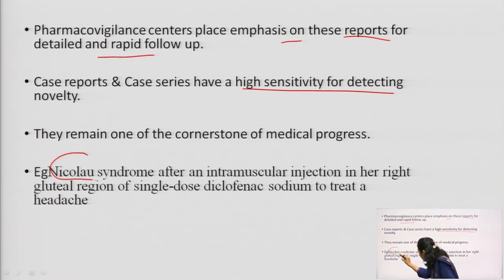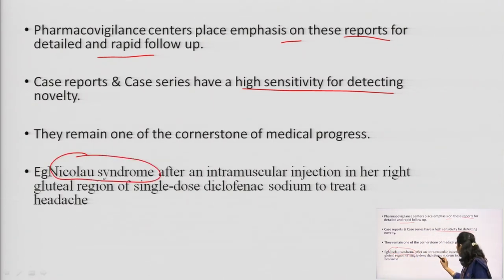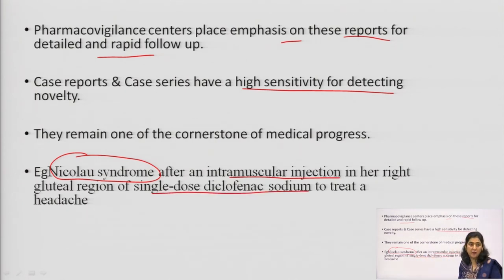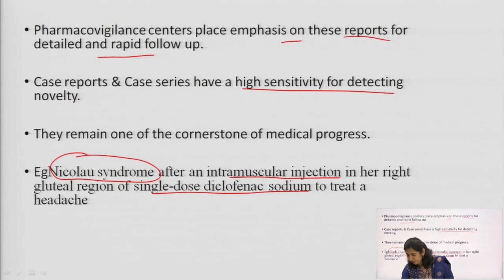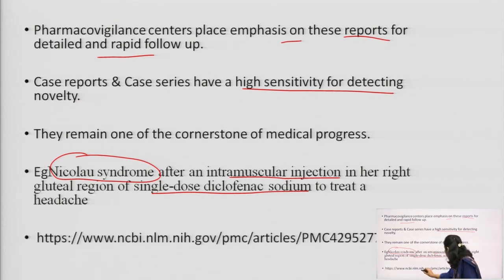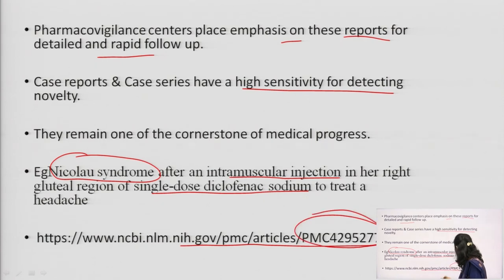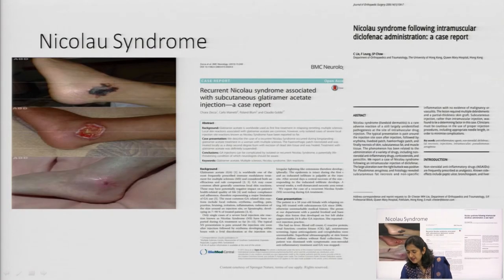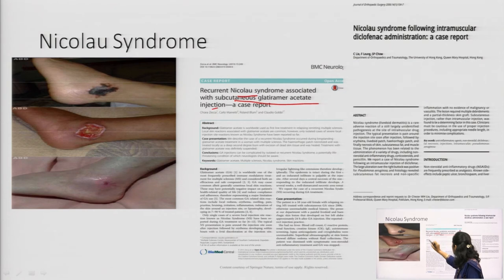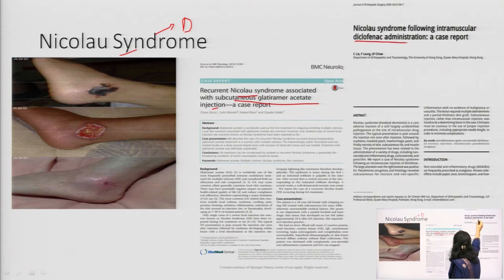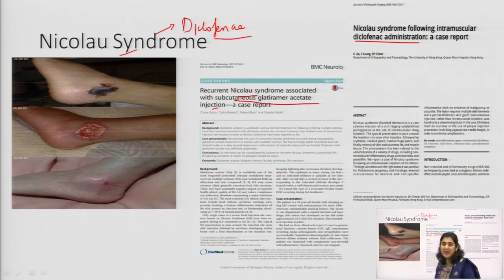Another important example is Nicolau syndrome. Please remember this syndrome — it occurred with a single intramuscular dose of diclofenac sodium injection, which is normally used to treat headache. A headache was being treated with diclofenac and Nicolau syndrome occurred. You can refer to the PubMed article (PMC code provided) for details: 'Recurrent Nicolau Syndrome Associated with Subcutaneous Injection.' Nicolau syndrome has also occurred with diclofenac injection, so diclofenac injection needs to be administered very carefully.